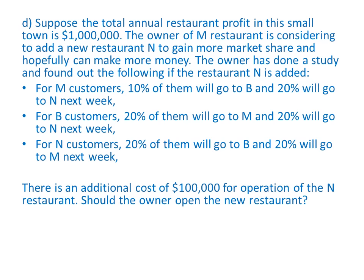This becomes a new Markov chain problem where the characteristic of interest is still the restaurant people pick each week, but now there are three possible values: M, N, and B. To determine whether the market share has changed, we need to calculate the steady-state probabilities — just as we did in part B — but now using a three-state transition probability matrix, and then compare the results.